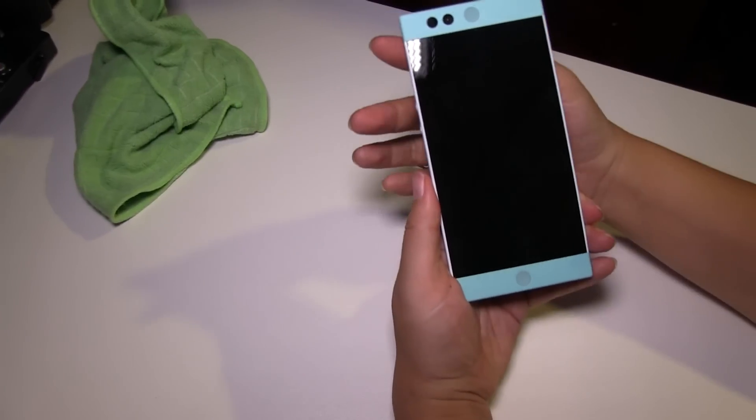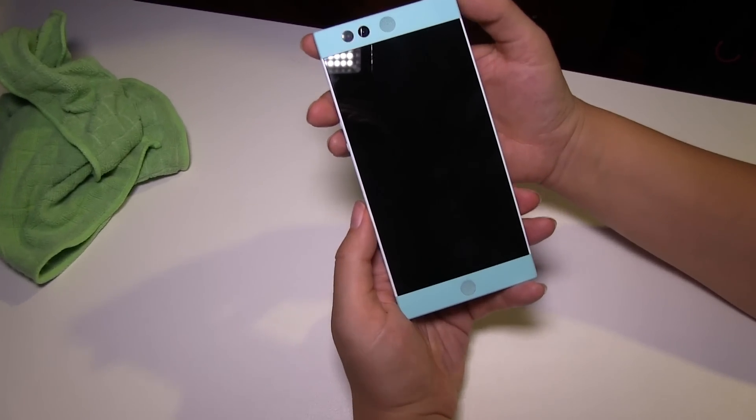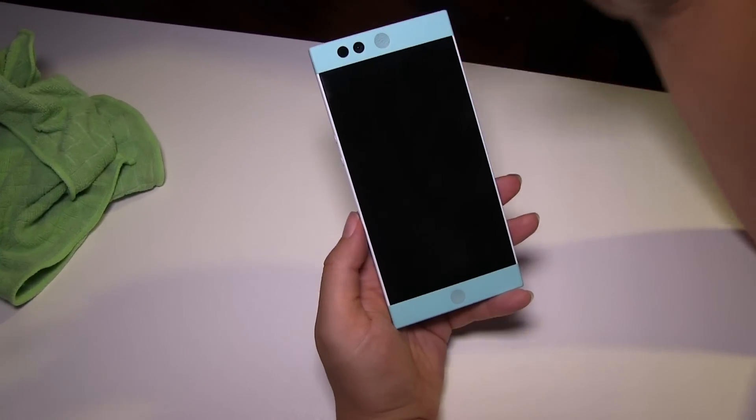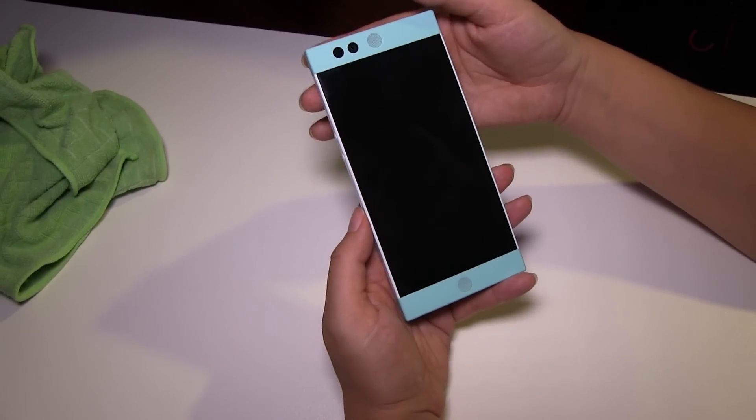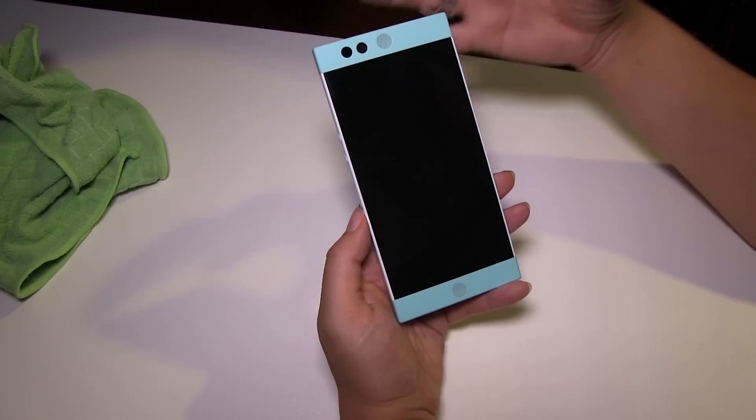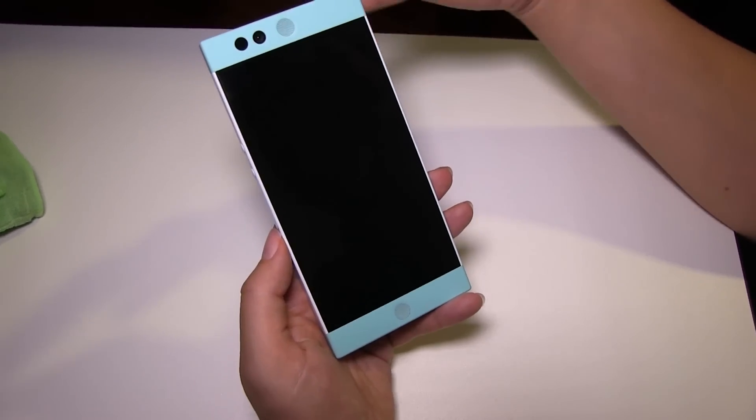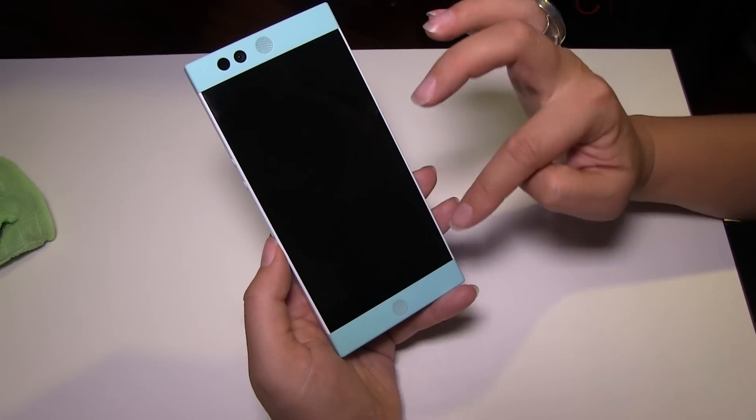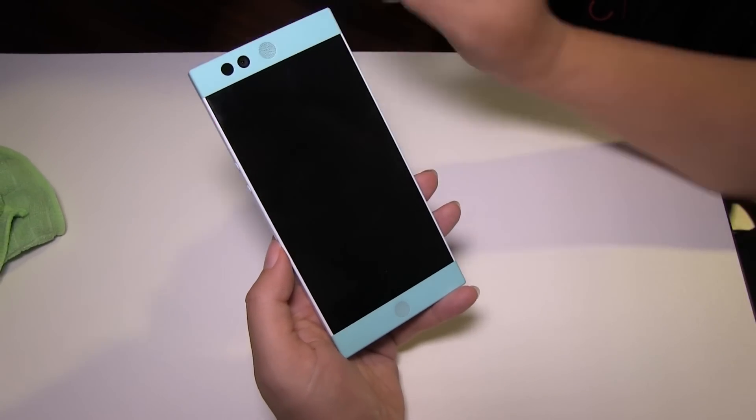5.8 inches. It's going to be running a Snapdragon 808 processor, 3 gigabytes of RAM. It's going to have 32 gigabytes of onboard storage, but 100 gigabytes online. And hopefully, this is going to go to unlimited. So the display is 5.2 inches, which I think is absolutely great.